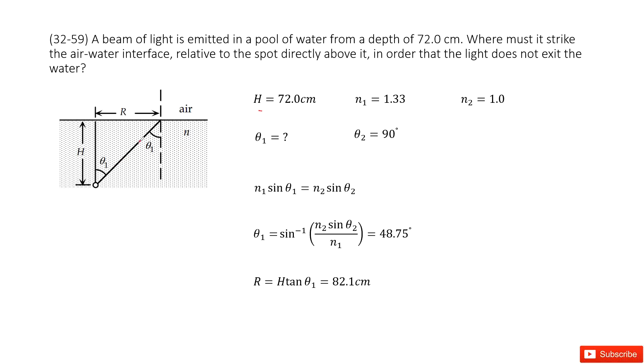Because the light is in the water, the incident angle theta 1 is unknown, and n1 is given as 1.33 for water. Then it tries to travel into the air at another surface where n2 is 1.0.